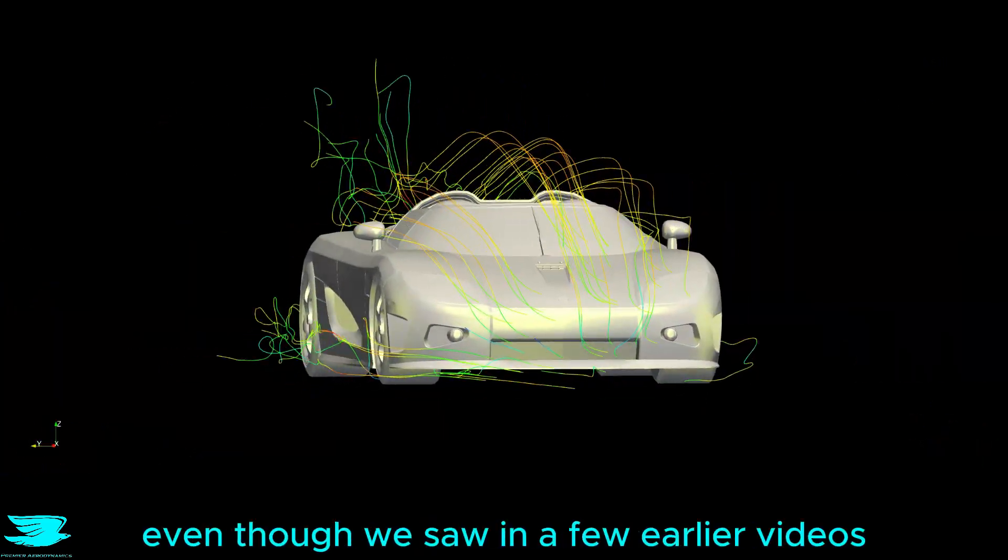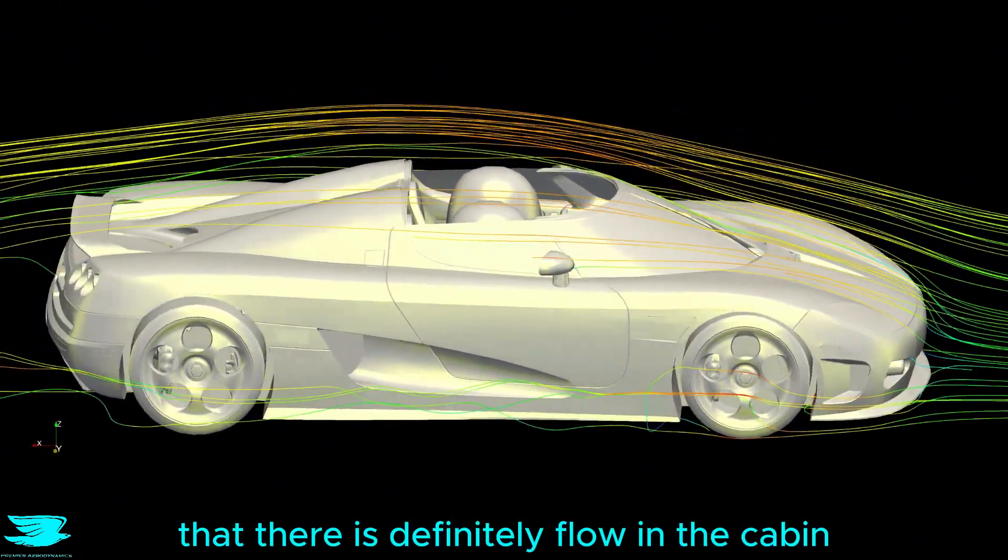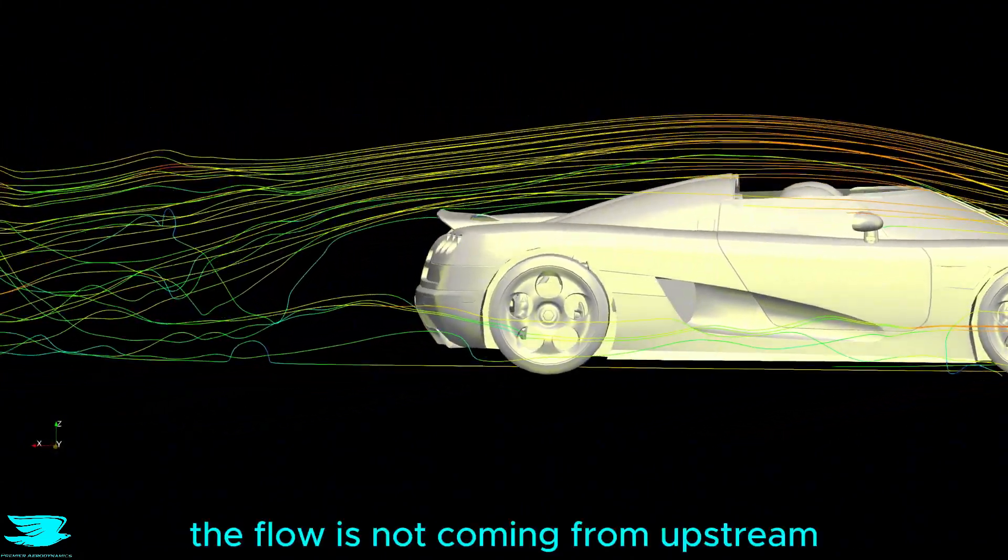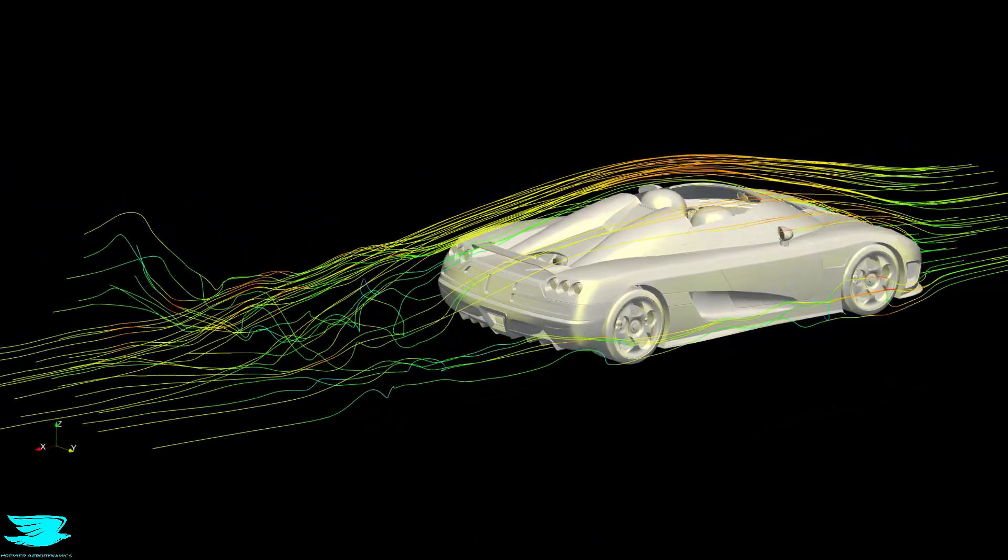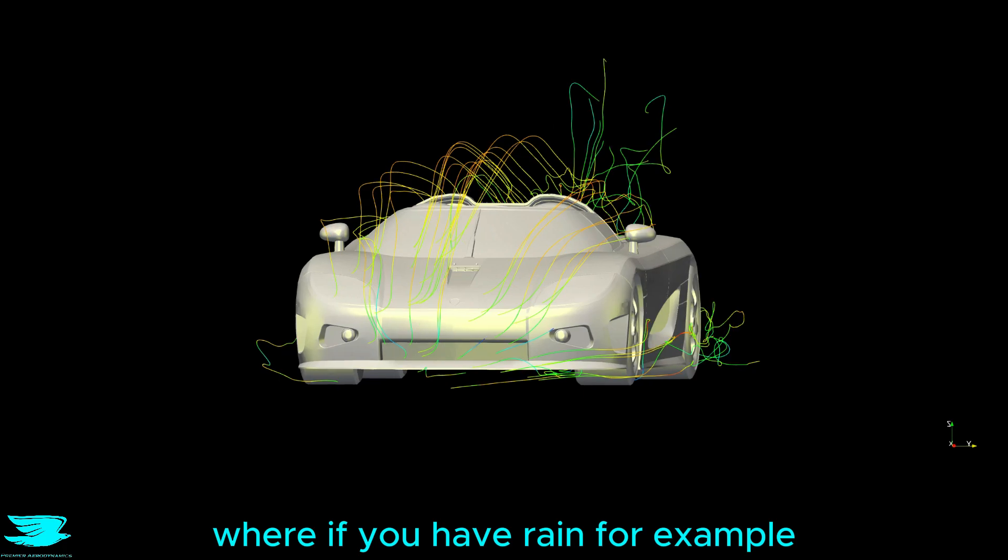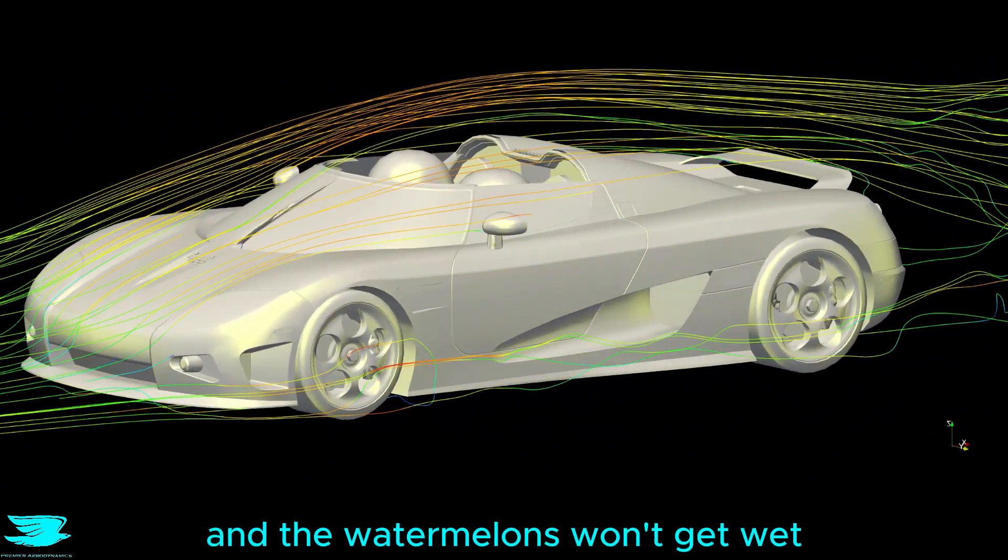These streamlines show that even though we saw in a few earlier videos that there is definitely flow in the cabin, the flow is not coming from upstream because you can see these streamlines just shoot over the roof and continue downstream. And that is what I was talking about earlier, where if you have rain for example, it will just get whisked away by the air and the watermelons won't get wet.